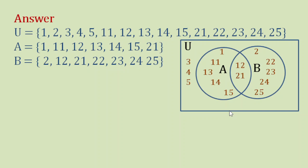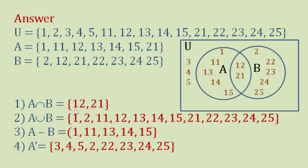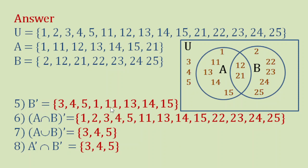Now you should be able to answer the 8 questions. The answers are: A intersection B = {12, 21}. A union B = {1, 2, 11, 12, 13, 14, 15, 21, 22, 23, 24, 25}. A minus B = {1, 11, 13, 14, 15}. A prime = {3, 4, 5, 2, 22, 23, 24, 25}. B prime = {3, 4, 5, 1, 11, 13, 14, 15}. A intersection B prime = {1, 2, 3, 4, 5, 11, 13, 14, 15, 22, 23, 24, 25}. (A union B) prime = {3, 4, 5}. A prime intersection B prime = {3, 4, 5}.